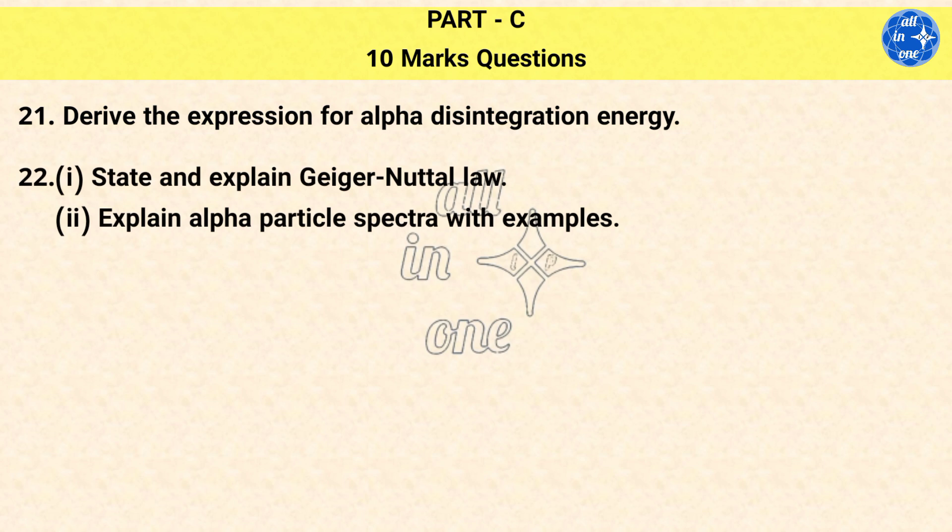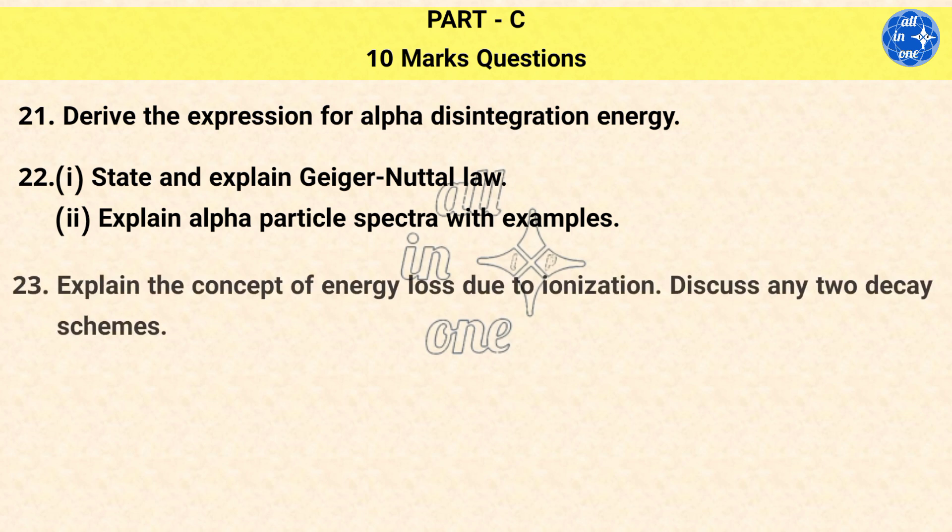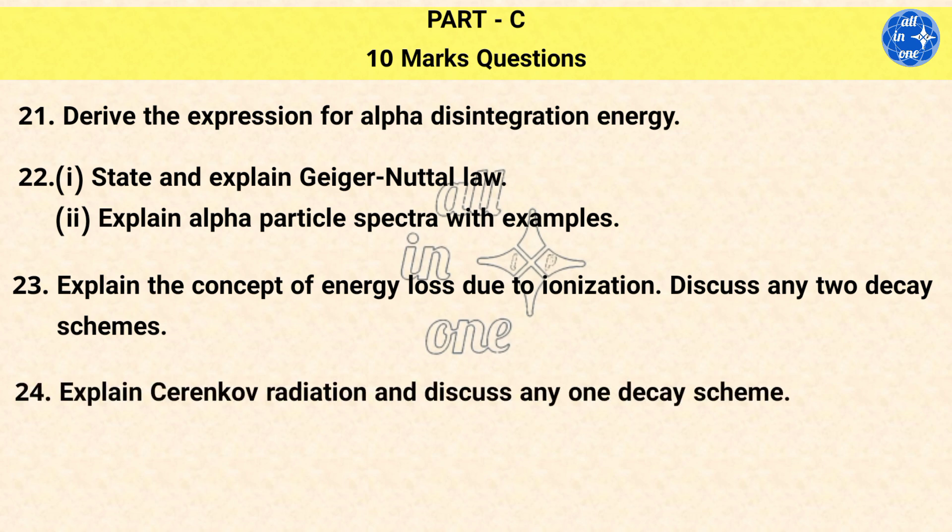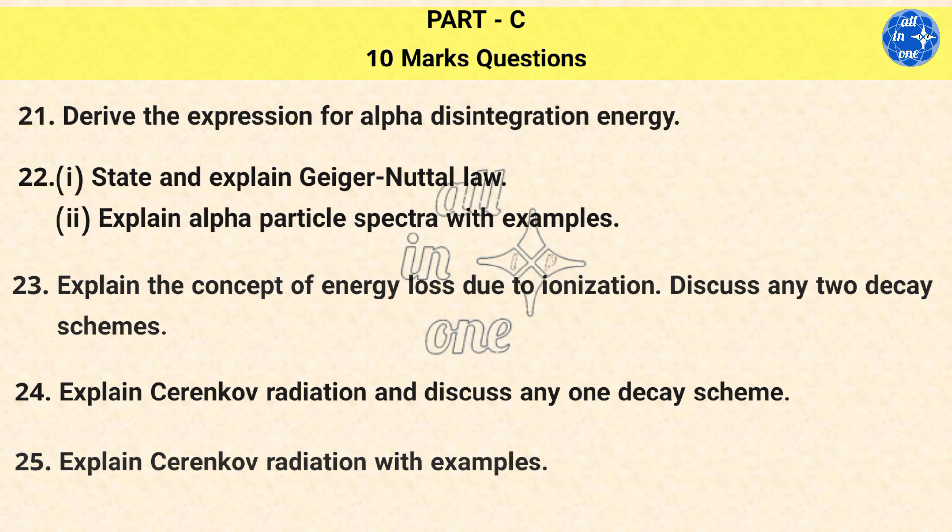Question 21: Derive the expression for alpha disintegration energy. Question 22: State and explain Geiger-Nuttal law. Explain alpha particle spectra with examples. Question 23: Explain the concept of energy loss due to ionization. Discuss any two decay schemes. Question 24: Explain Cherenkov radiation and discuss any one decay scheme. Question 25: Explain Cherenkov radiation with examples.